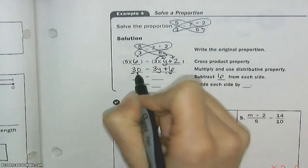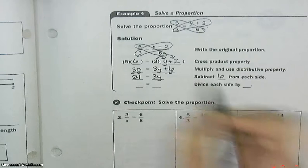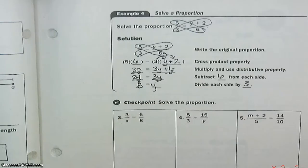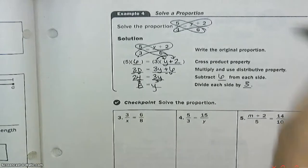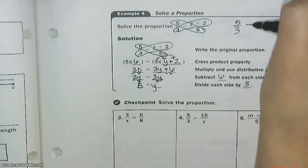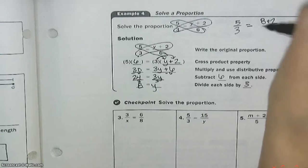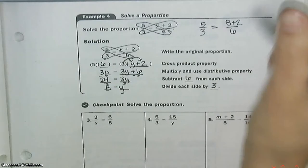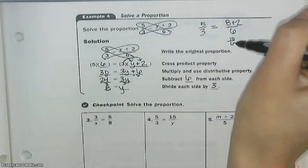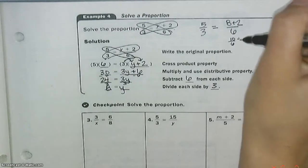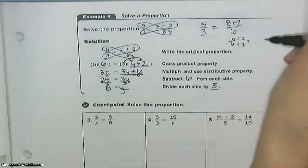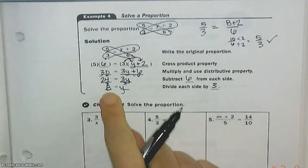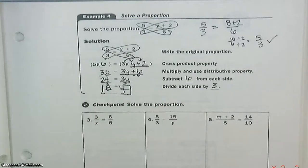24 equals 3y. Divide by 3. 8 is equal to y. Now let's check that to see if we like that. 5 over 3, is that really equal to 8 plus 2 over 6? Let's see. 8 plus 2 over 6 is 10 over 6. And if we simplify 10 over 6, divide top and bottom by 2, we get 5 over 3. Perfect. That's what we want. 5 over 3 to equal 5 over 3. So the answer was right. 8 is equal to y.